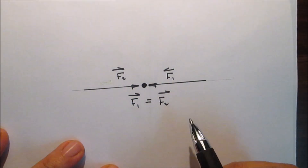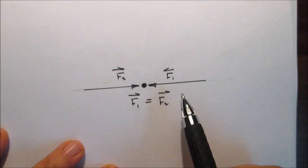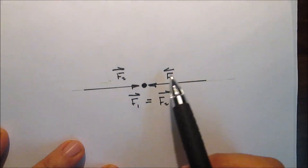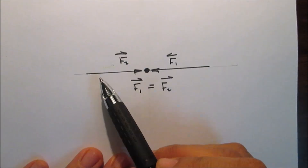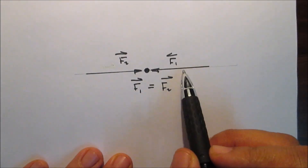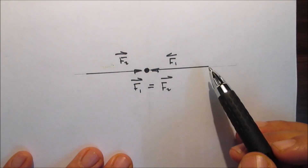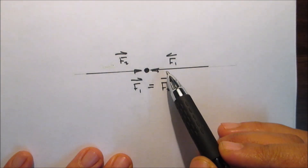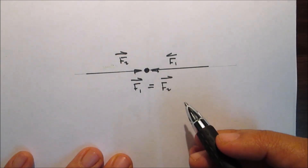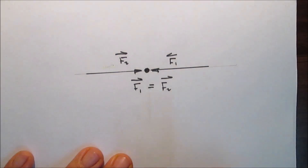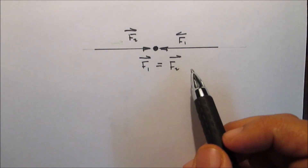If a body is in equilibrium under the action of two forces, then the two forces are equal in magnitude, opposite in direction, and they are acting on the same line of action. If two coplanar forces, F1 and F2, are acting at a point and they are in equilibrium, then F1 and F2 are equal in magnitude, opposite in direction, and they are acting on the same straight line. This is the condition of equilibrium of a body under the action of two forces.